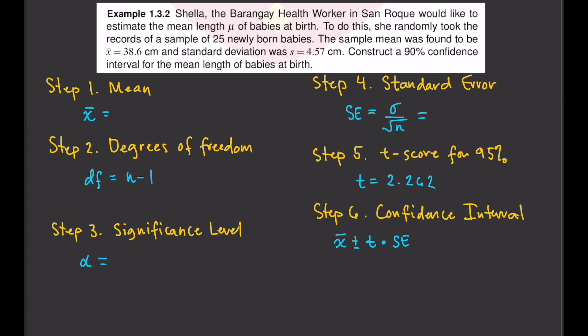Let's have another example. Shella, the barangay health worker in San Roque, would like to estimate the mean length mu of babies at birth. She randomly took the records of a sample of 25 newly born babies. The sample mean was 38.6 centimeters and the standard deviation was 4.57 centimeters. Construct a 90% confidence interval for the mean length of babies at birth.